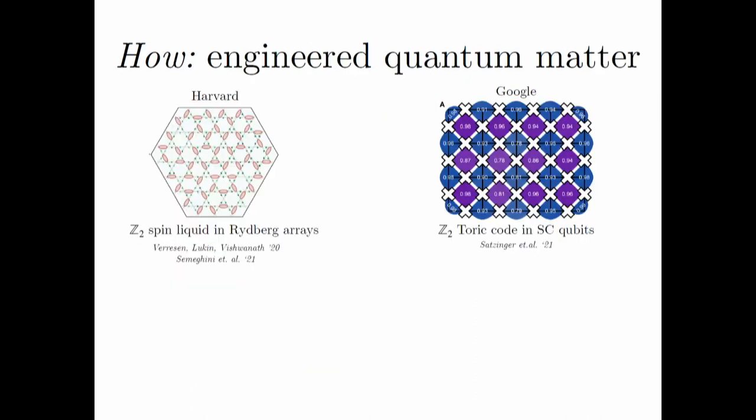This brings us to engineered quantum matter, where instead of looking for a condensed matter system with anyons, we make one ourselves in the lab. A couple of years ago, two teams — one from Harvard and one from Google — showed how to make the simplest abelian topological order: the Z2 spin liquid or the Z2 toric code. The Harvard group put Rydberg atoms in an array whose ground state realizes the Z2 spin liquid. The Google team used a unitary circuit in superconducting qubits to evolve with gates and demonstrate the Z2 surface code.